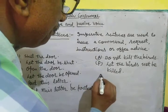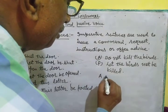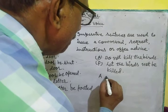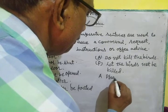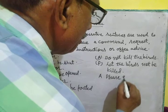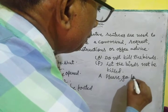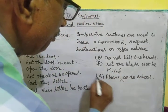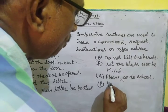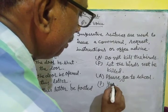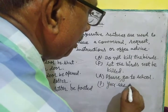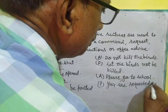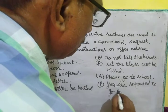Active — Please go to school. Passive — You are requested to go to school.